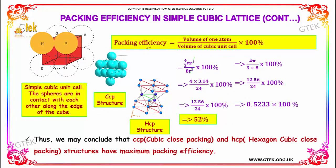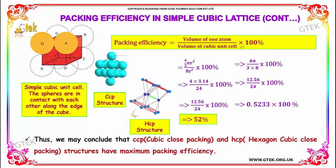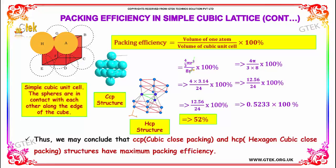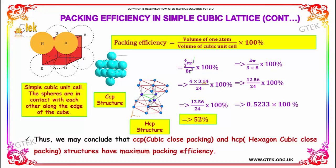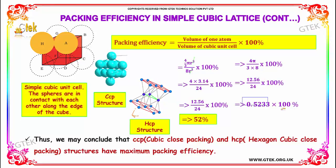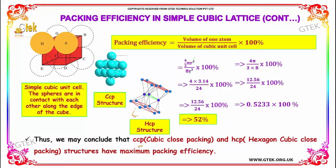The packing efficiency is calculated as the volume of one atom divided by the volume of the cubic unit cell, multiplied by 100%. So (4/3)πR³ divided by 8R³, cancelling R³, and replacing π with 3.14, gives 0.5233 into 100%, so the total packing efficiency is 52%.